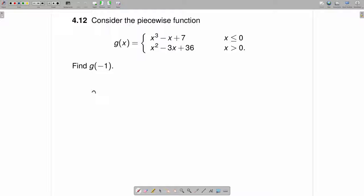So when we find g of negative 1, we plug into that top piece and this will be negative 1 cubed minus a negative 1 plus 7.